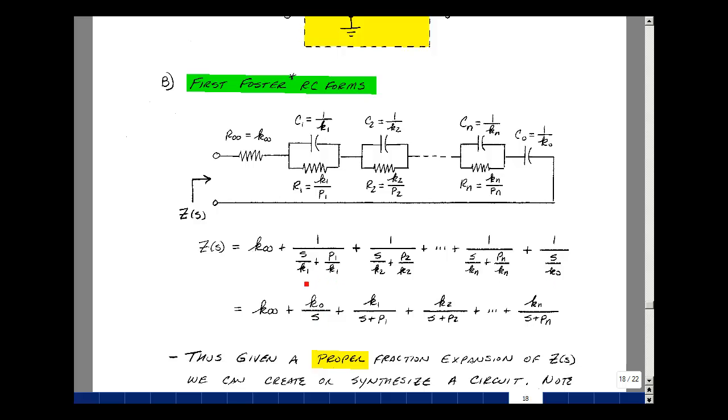Multiply through by K1, getting K1 divided by S plus P1. Likewise K2 divided by S plus P2 all the way through K sub n divided by S plus Pn. Bring the K0 up into the numerator. What we've got then is a partial fraction expansion of an impedance expressed as a circuit, where the resistances are either the residues or the residues divided by a pole, and the value of the capacitance is the reciprocal of the residues.